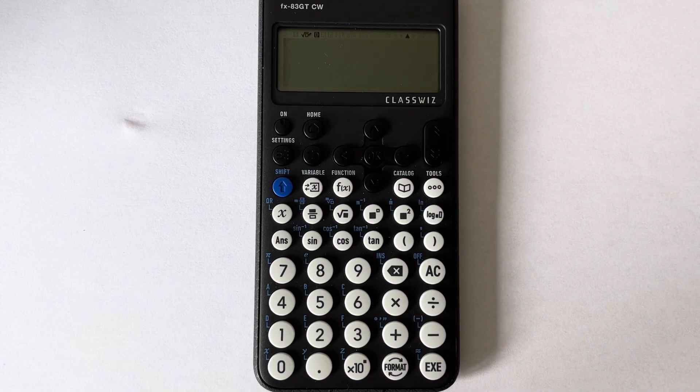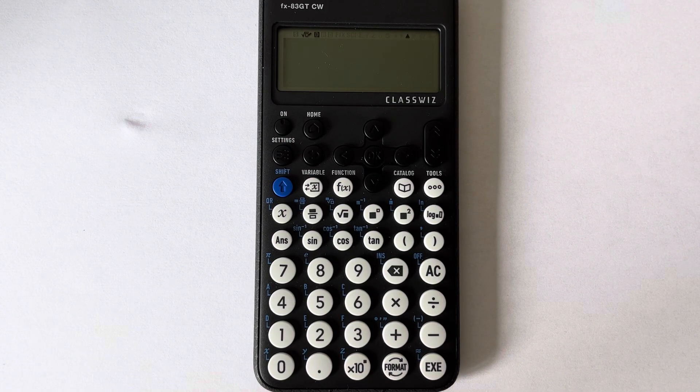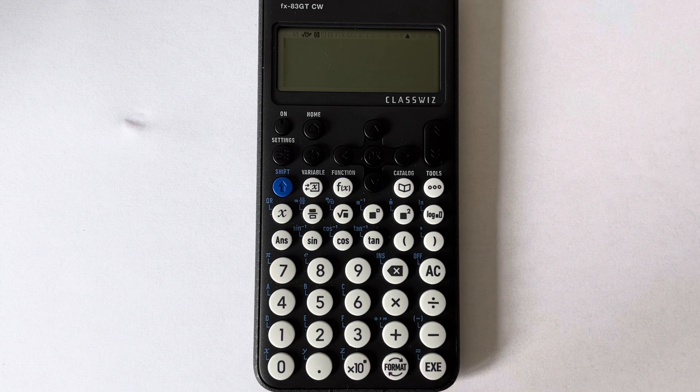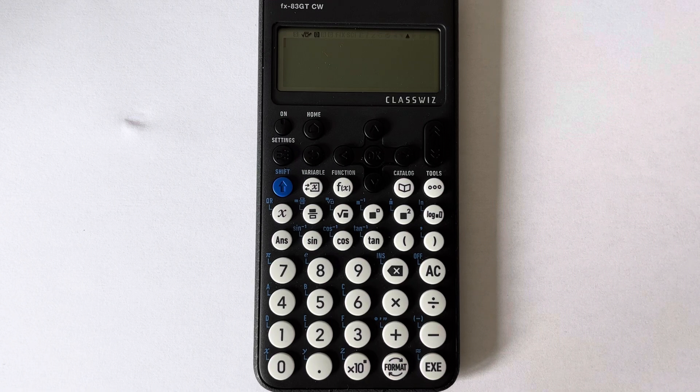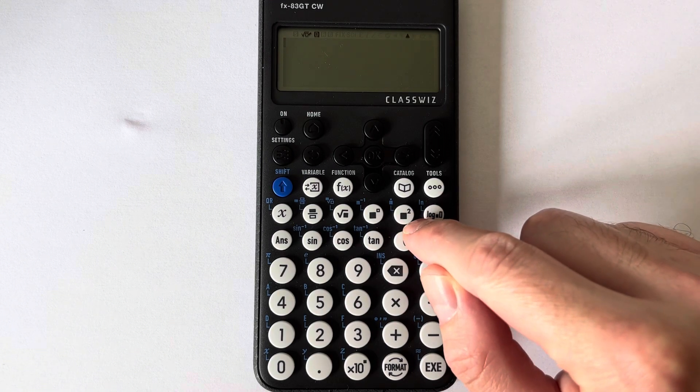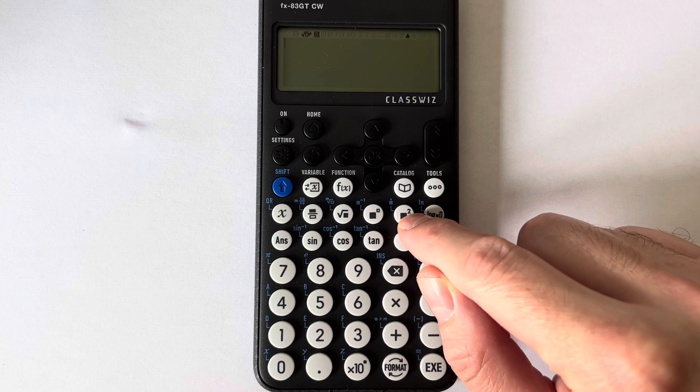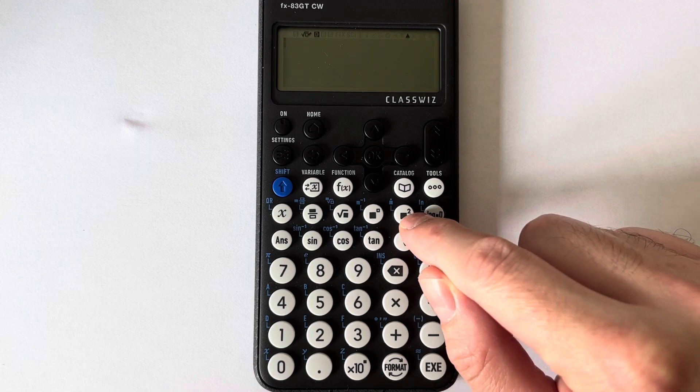Hi guys, welcome back. This is MathsMark. Today I'm going to show you how to type in a recurring decimal on the Casio FX-83 GTCW calculator. So the recurring decimal key is located on the second function of the squared key.